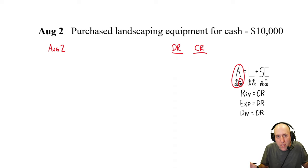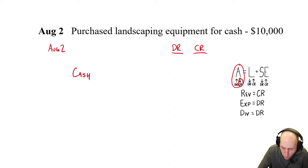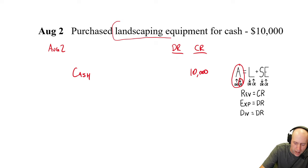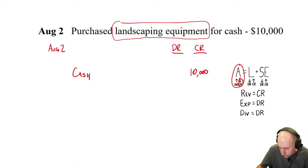August 4th: provided landscaping service for a customer; the customer paid cash of $75 for the service. Did cash change hands? Yes. Is our company's cash going up or down? It's going up — our cash asset is increasing, so we debit cash $75. A customer paying cash for service means we did work to earn money. This is a revenue-earning situation, so we credit landscaping revenue for $75.